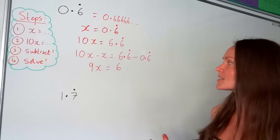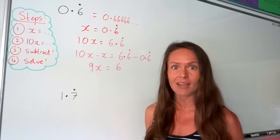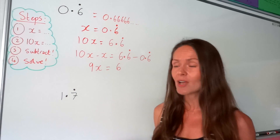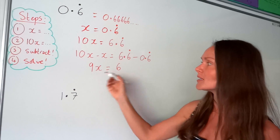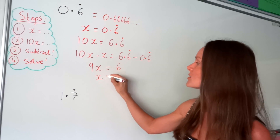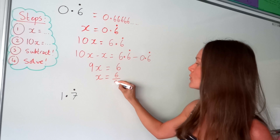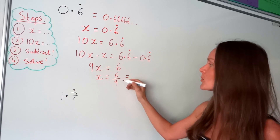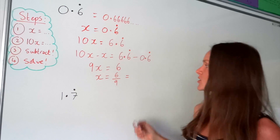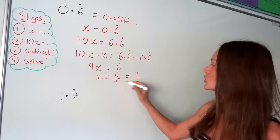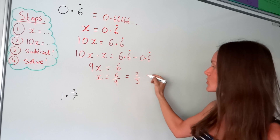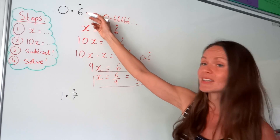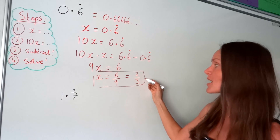The last step is to solve this equation to find x. Because x is being multiplied by 9, the opposite is to divide by 9, so I have to divide by 9 on both sides of the equation to keep it balanced. I'm left with 6 over 9, which is our fraction, but we can simplify it because both numbers have a factor of 3. Dividing the top and denominator by 3 gives our final fraction: 0.6 recurring is the same as 2 over 3.